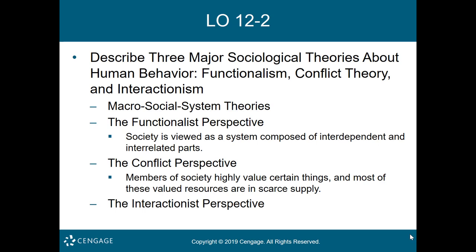Functionalists assert that most people obey the law because they believe the law is fair and just. Conflict theorists assert that social order is maintained by authority backed by the use of force — most people obey the law because they are afraid of being arrested, imprisoned, or even killed if they do not. Functionalists assert that most people in society share the same set of values and norms; in contrast, conflict theorists assert that modern societies are composed of many different groups with different values, attitudes, and norms, and therefore conflicts are bound to occur. The abortion issue illustrates such a value conflict — pro-life groups believe that aborting a pregnancy is murder, while pro-choice advocates assert that an embryo for the first few months after conception is not yet a human being because it is unable to survive outside the womb.